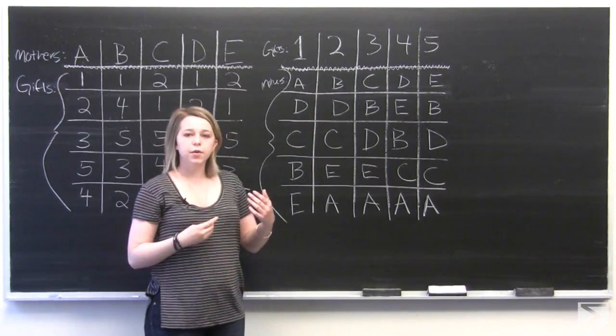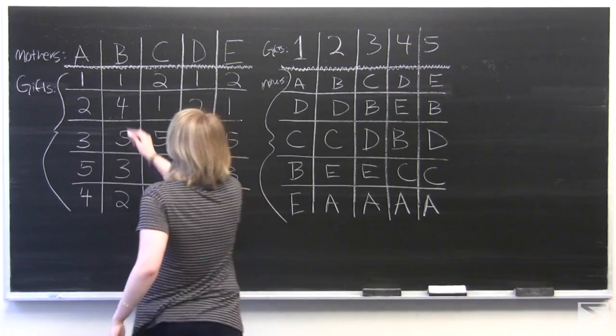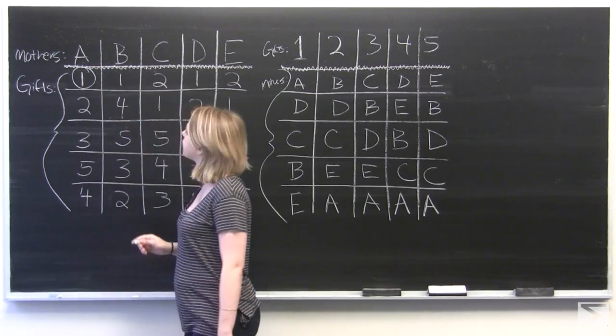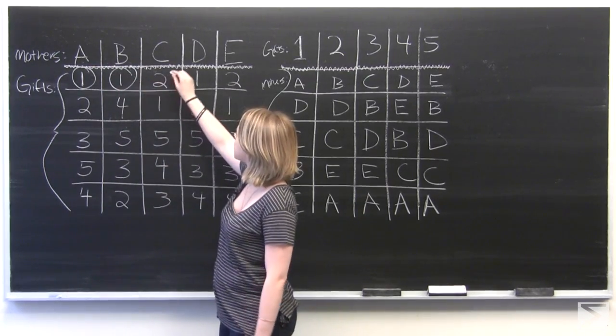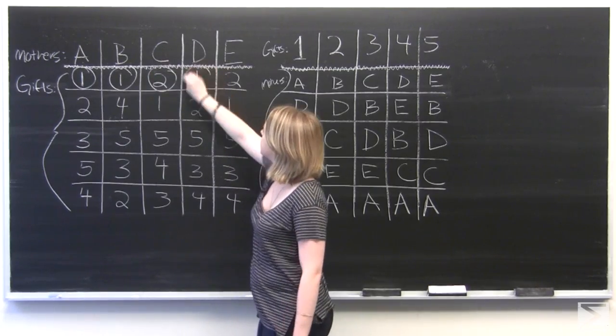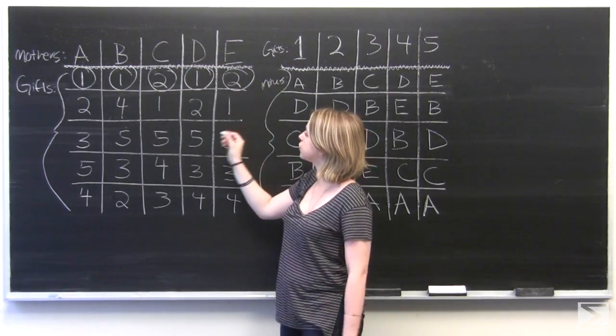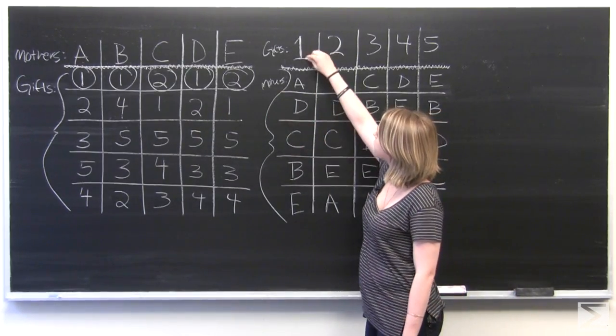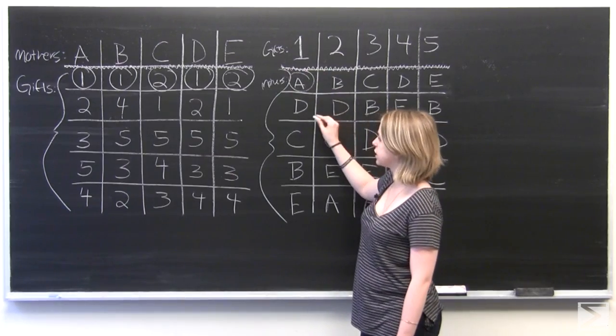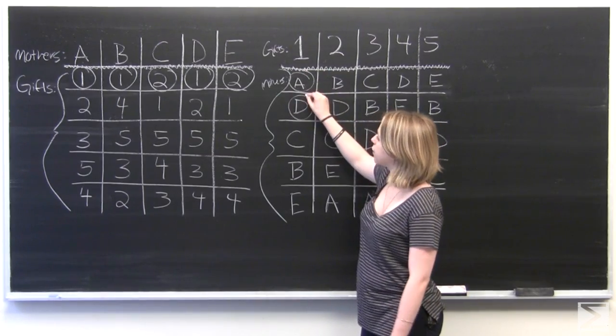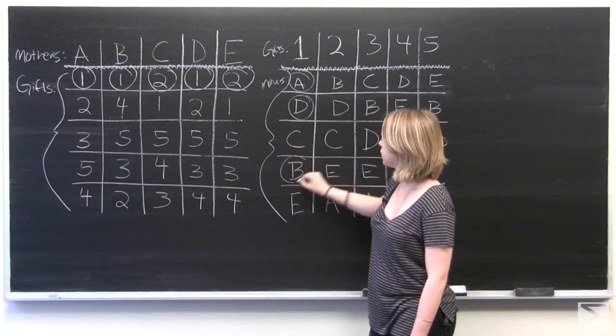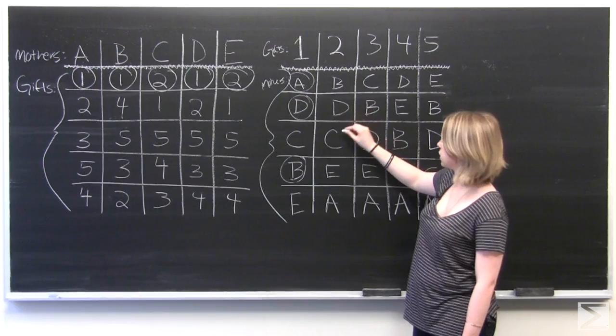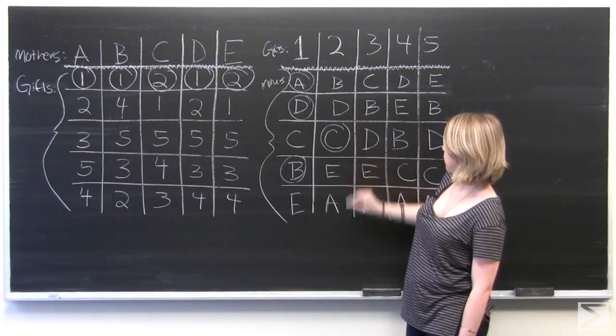And so we're going to start the algorithm. Mother A chooses gift number one. Mother B chooses gift number one as well. C chooses two. D chooses one. And E chooses two. And so on this chart, for gift number one, Mother A has chosen it, and Mother D has chosen it, and Mother B has chosen it. And for gift number two, we've got Mother C and Mother E.